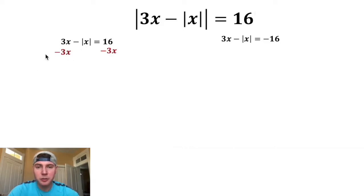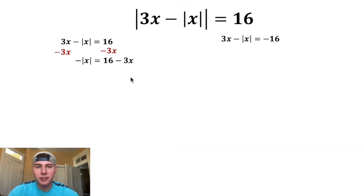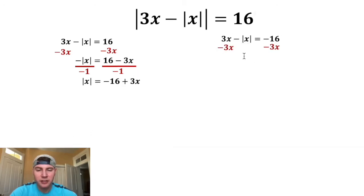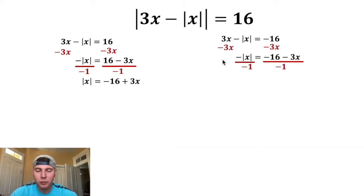To isolate the inner absolute value, subtract 3x from both sides. The left-hand side becomes negative absolute value of x, and the right-hand side becomes 16 minus 3x. Dividing both sides by negative 1 gives absolute value of x equals negative 16 plus 3x. Doing the same to the second equation gives absolute value of x equals 16 plus 3x.